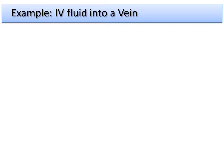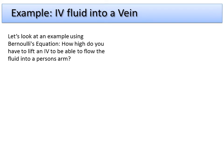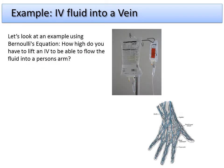We're going to do an example using Bernoulli's equation. We're going to look at how to get IV fluid into a vein. So you go to the hospital, they put an IV in you. How and why do they do certain things? The question is: how high do we have to lift the IV to make sure that it flows into a person's arm? We have this IV fluid, and we're going to put it into one of the veins in your hand.